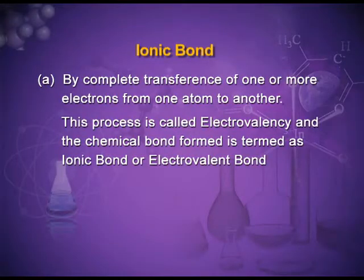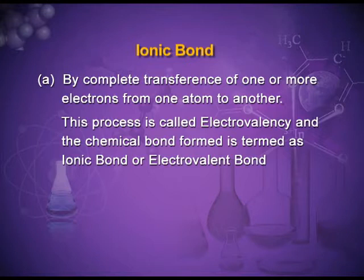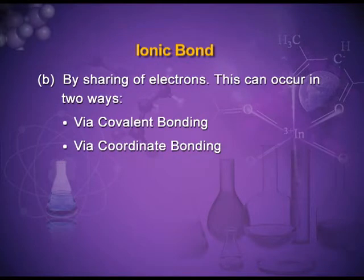Ionic bond is formed by the complete transference of one or more electrons from one atom to another; this process is called electrovalency and the chemical bond formed is termed the ionic or electrovalent bond. By sharing of electrons, a covalent bond is formed. When one electron each is shared it is a normal covalent bond, but in a special type of sharing where both electrons are contributed by one atom, it is a coordinate bond — a special type of covalent bond.